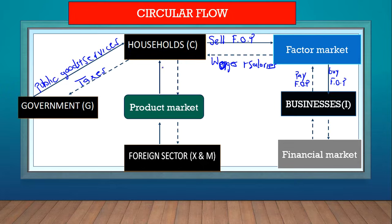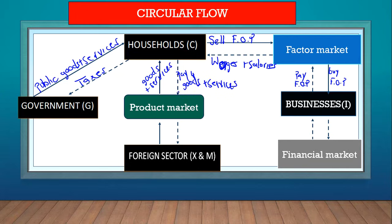Now let's look at the interaction between households and the product market. The real flow is that this is where we get our goods and services — we buy goods and services from the product market. In return, we need to pay for those goods and services, which is the money flow.